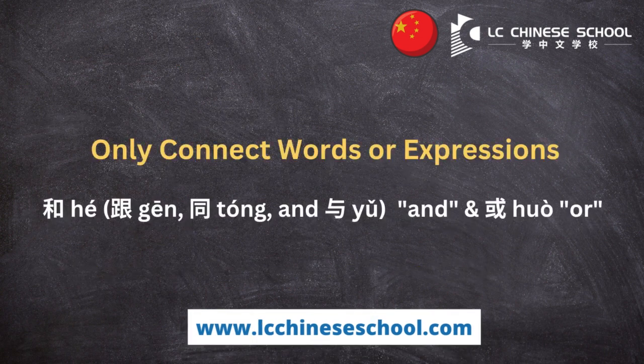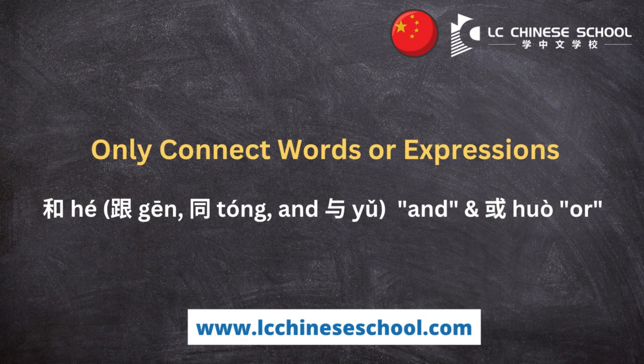The conjunctions 和 (hé), 跟 (gēn), 同 (tóng), and 与 (yǔ) mean 'and', and 或 (huò) means 'or'. These conjunctions cannot link clauses together — they are only used to connect words and expressions.